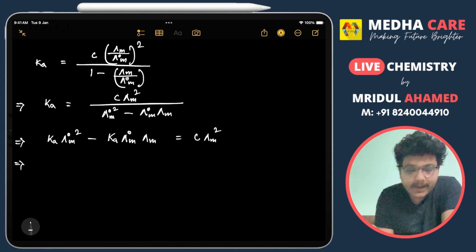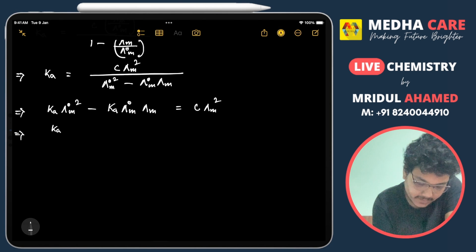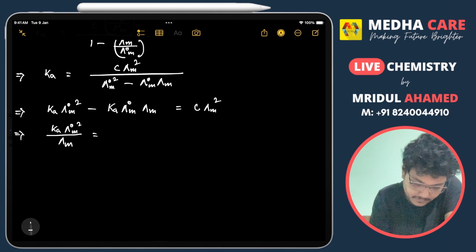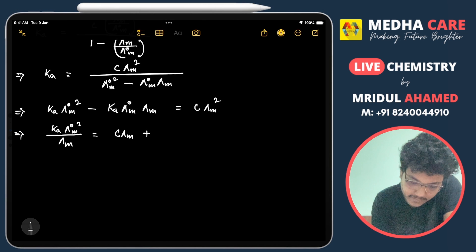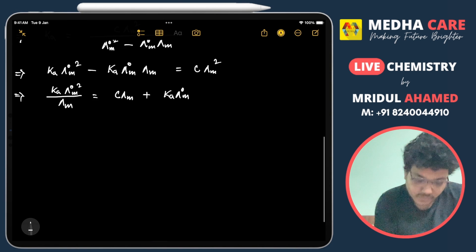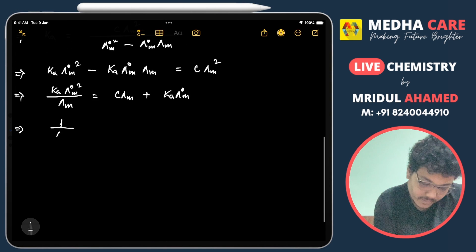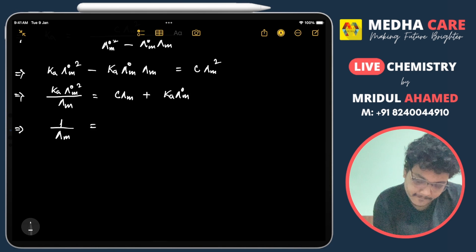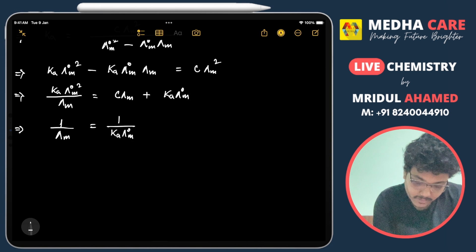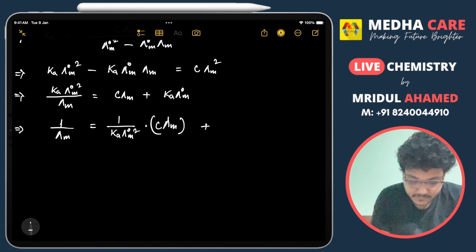Dividing the equation by Ka·λ°m², we get: 1/λm = (1/(Ka·λ°m²))·c·λm + 1/λ°m. This is the linear equation relating 1/λm and c·λm.